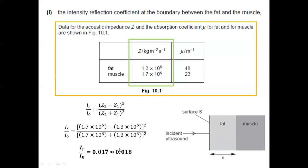All we have to do is substitute the values into the formula, giving a final value of around 0.018. That means 0.018 of the intensity reaching this boundary gets reflected. One tip: in doing the solution for the intensity reflection coefficient, you can actually drop the multiplier times 10 raised to 6, because it appears for both the acoustic impedances of the fat and the muscle, so it cancels out. You can simply use 1.7 minus 1.3, squared, divided by the square of the sum of 1.7 and 1.3, and your final answer will be 0.018.